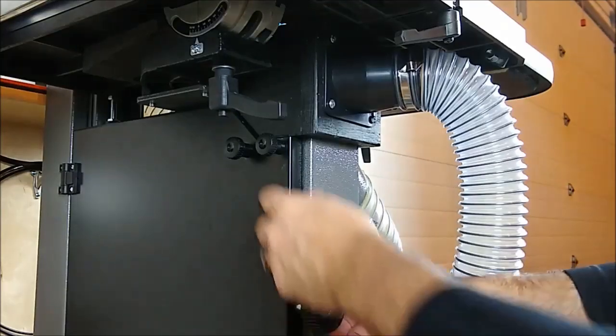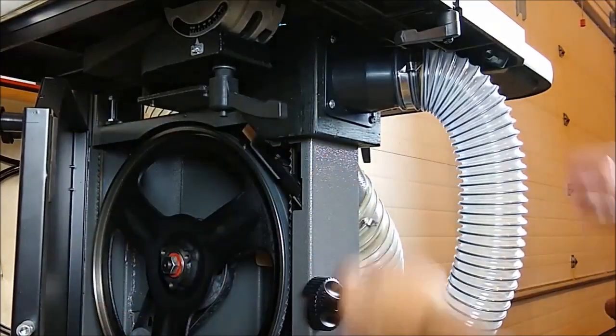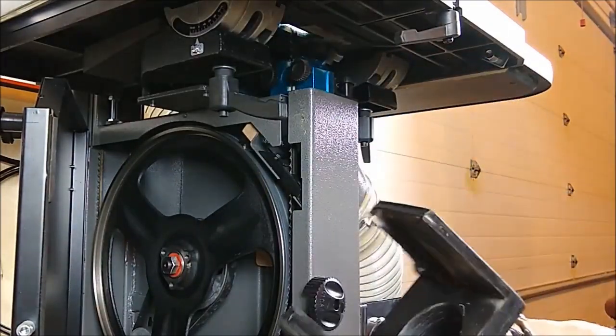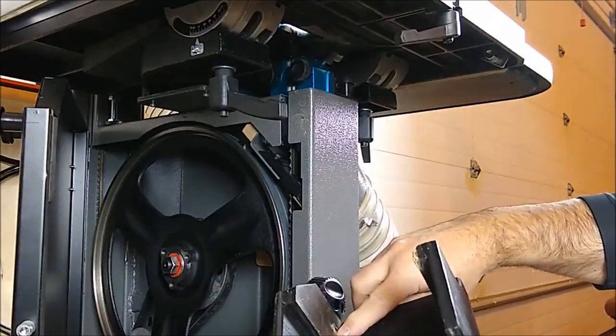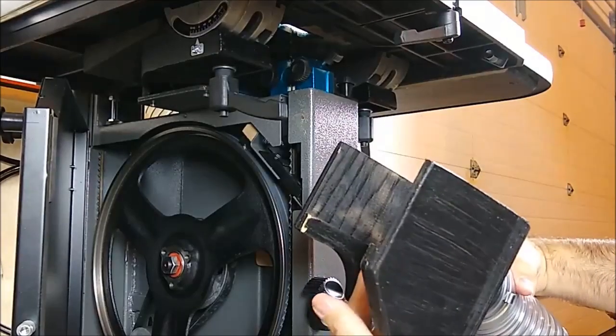So here you can see the new dust port that we've added under the saw. Basically to pull it off, all you have to do is just open the lower door and then just pull it right off. It's attached with rare earth magnets here and here.